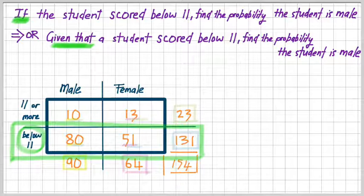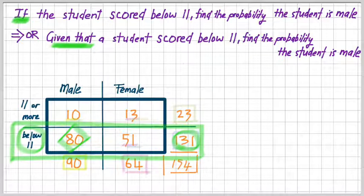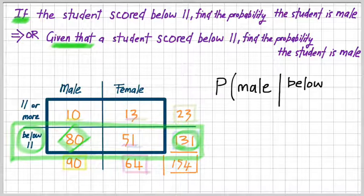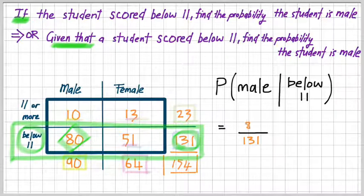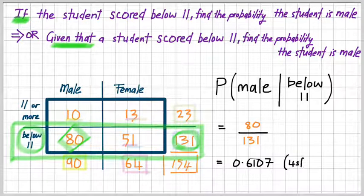The total number of students who scored below 11 is 131, and the total number of males who scored below 11 is 80. So the probability of the student being male, given that the student scored below 11 in the beep test — the total is 131, and 80 males scored below 11. So 80 divided by 131 gives us 0.6107, also to four significant figures.